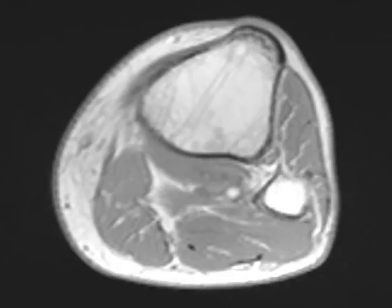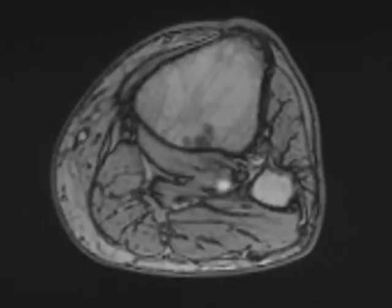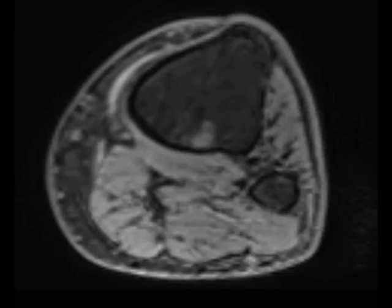Red or hematopoietically active marrow is present throughout the skeleton at birth. In adults, red marrow is typically concentrated in the axial skeleton, while yellow marrow is concentrated in the appendicular skeleton. Islands of red marrow may be seen anywhere in the skeleton, typically in a subcortical location. Causes of red marrow proliferation include conditions such as cigarette smoking and physical activity.